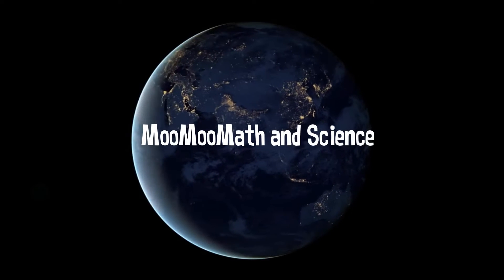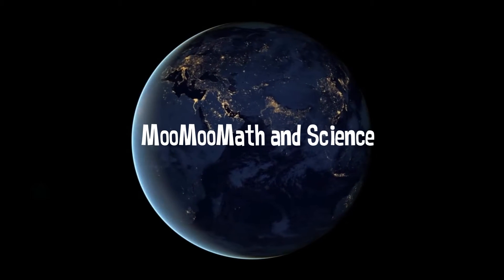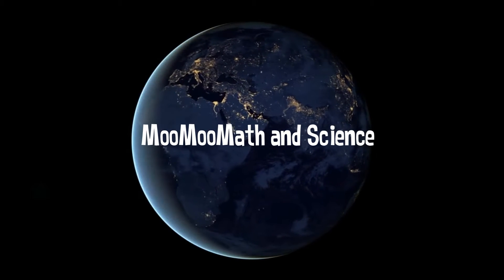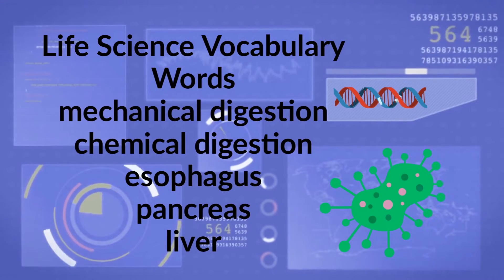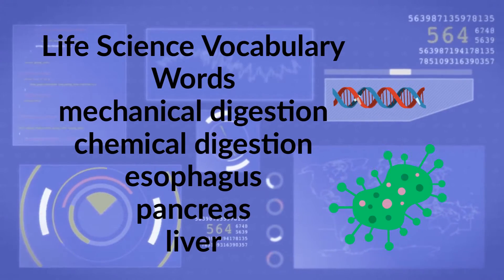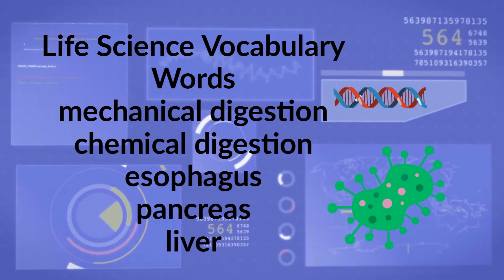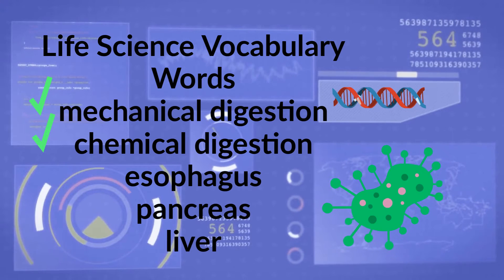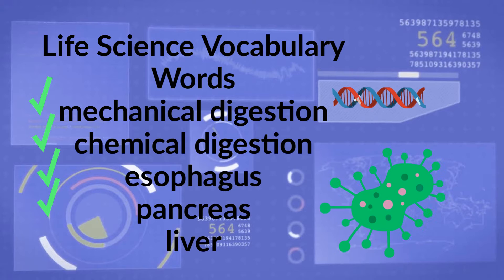Welcome to MooMooMath and Science Life Science Vocabulary. In this video, we will cover the following vocabulary words: Mechanical Digestion, Chemical Digestion, Esophagus, Pancreas, and Liver.